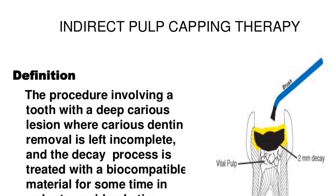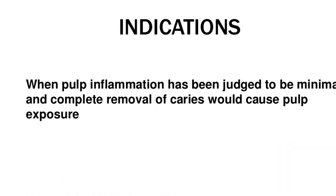Definition of indirect pulp capping: The procedure involving a tooth with a deep carious lesion where carious dentin removal is left incomplete and the decay process is treated with a biocompatible material for some time in order to avoid pulp tissue exposure is termed as indirect pulp capping.